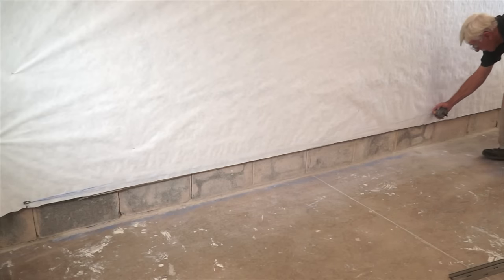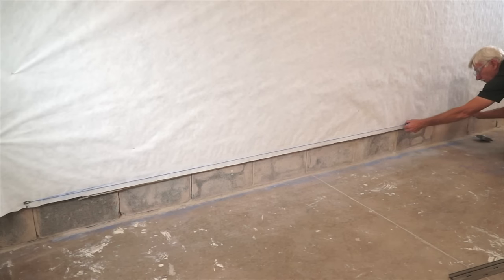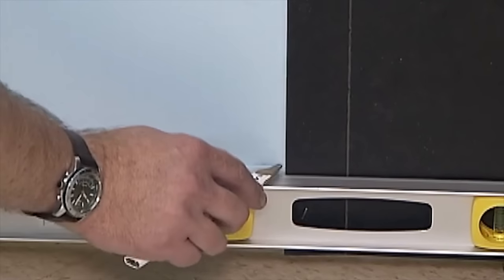The next step in getting started is establishing chalk lines for the top of the starter strip, which locks the first row of siding. Chalk lines can be located level with the lowest point to be sided or aligned with an existing soffit.